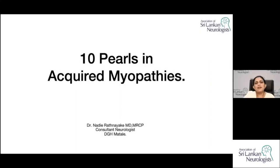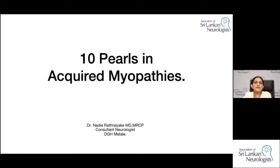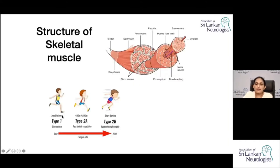Moving on to the next topic on myopathies, the entity of acquired myopathies. Before moving into the topic proper, the term 'muscle' has derived from the Latin term 'musculus,' which means a little mouse — maybe because the contracting muscle takes the shape of a little mouse.